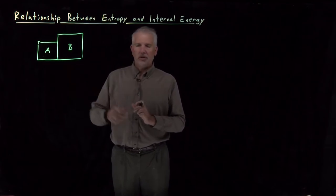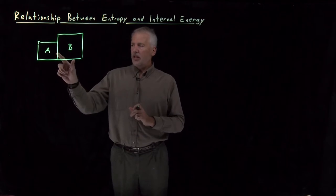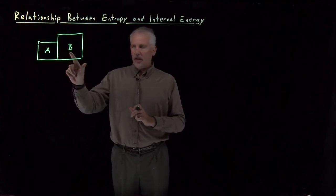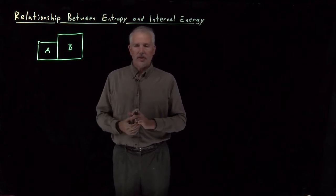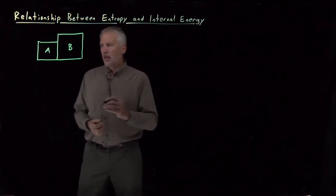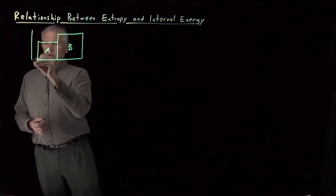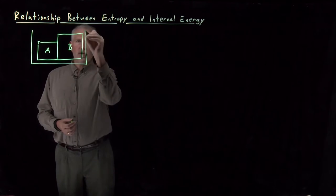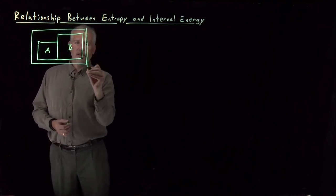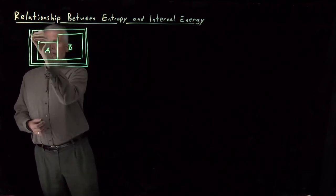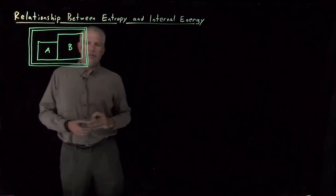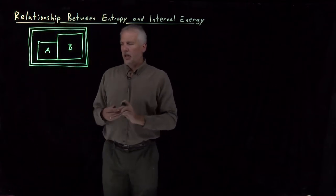They could be any two systems at all, as long as they're in contact with one another. Energy needs to be able to flow from one into the other. So I'm also not going to want energy to flow between these systems and the outside world, the environment. So let me surround these two blocks of materials A and B with this insulating wall.